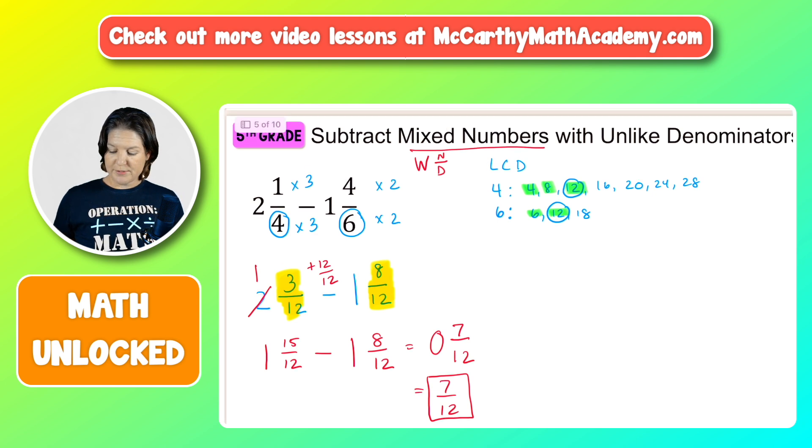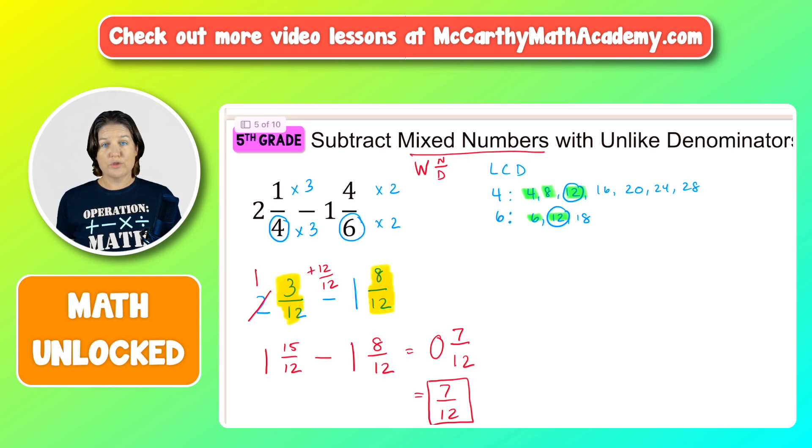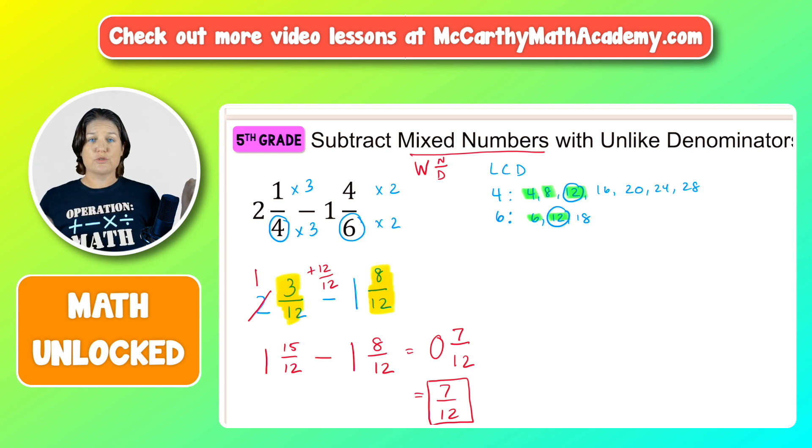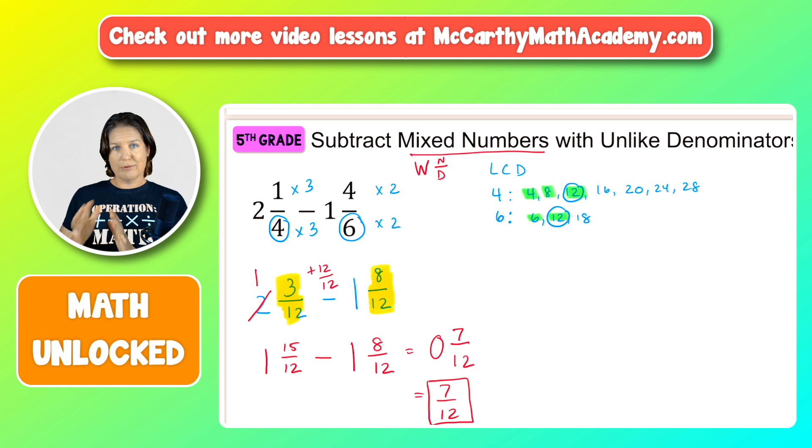So to review those steps. When we add or subtract with fractions, our denominators must match. So we had to make them match by finding the least common denominator. That was 12. We rewrote the fractions to have a denominator of 12. We checked to see if we could subtract the fractions and we needed to regroup a little bit. And after we regrouped that fraction by taking one whole and giving that whole to the fraction by breaking it up a little bit, we were able to then successfully subtract those mixed numbers.